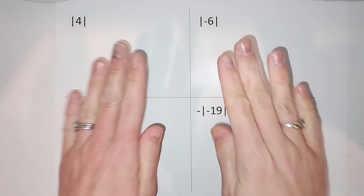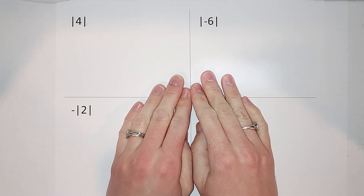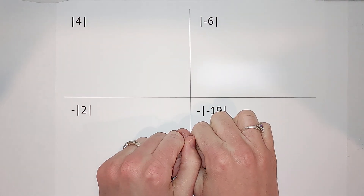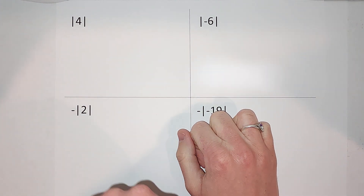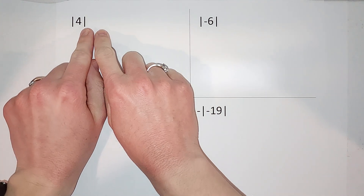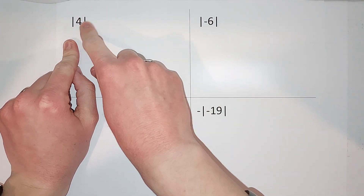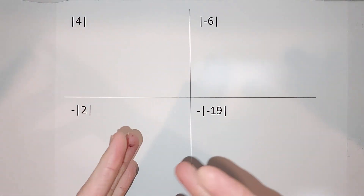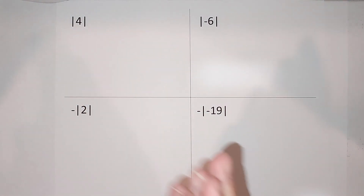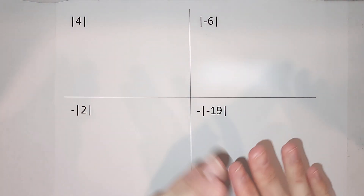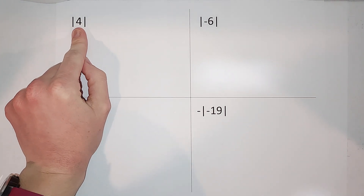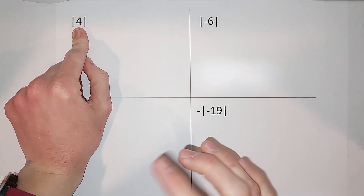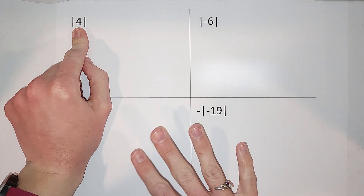Absolute value is going to be one of your favorites because it is not too tricky. When you see these two lines around a number, it is asking for the absolute value of that number. All it is asking for is: how far is this number from zero? It's asking for a distance.